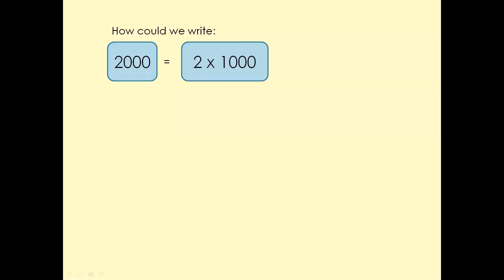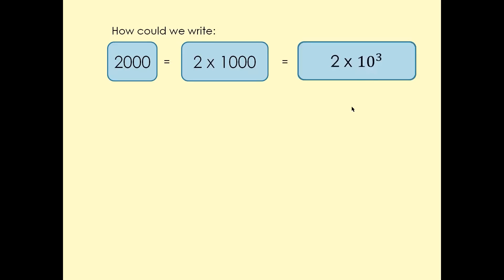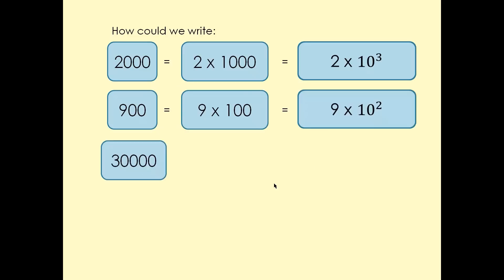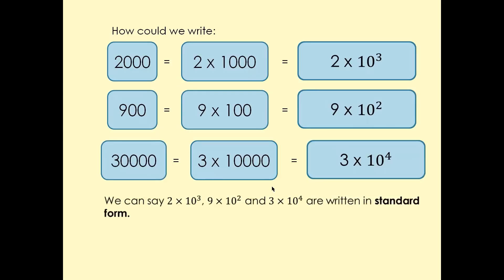So for example, if you write a number in standard form, the answer is a number times 10 to the power something. So 2,000 is going to be 2 × 10³. For 900, that's going to be 9 × 10². Same story for others — these numbers are written in standard form.